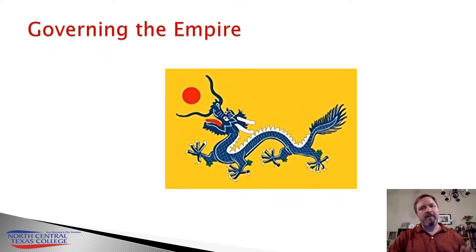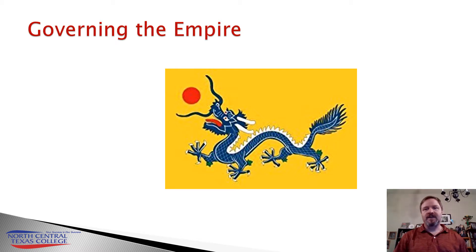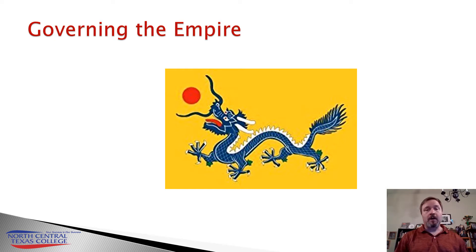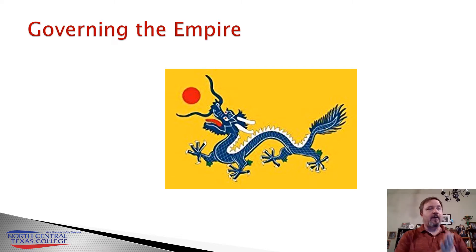The Qing emperors had to be many things to many people. They were Manchu, and they would use that to claim their Mongol ancestry. So they were seen as the leader of the Manchu, but also a leader amongst the Mongols.